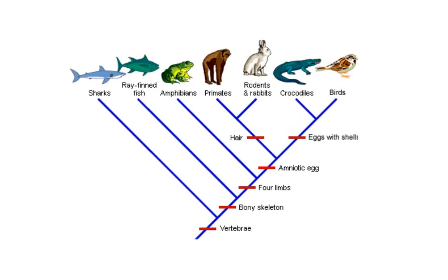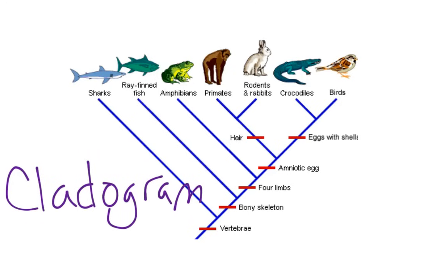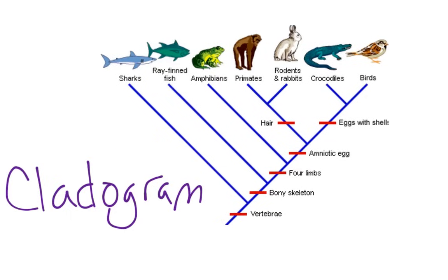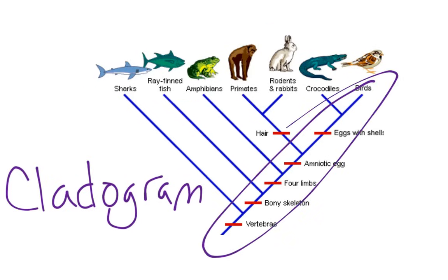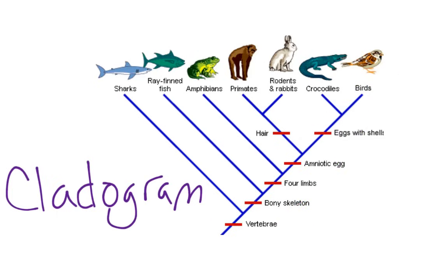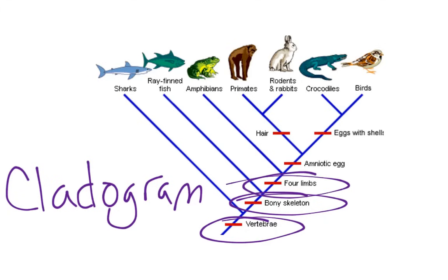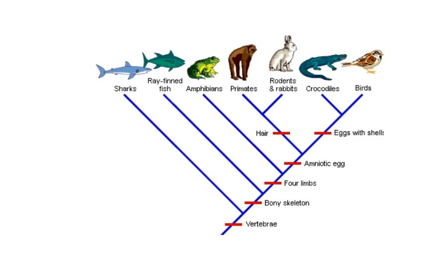In quick review: a cladogram is a diagram that shows evolutionary relationships. It arranges organisms across the top, shows you what the different groups are, and gives you an evolutionary lineage showing which organisms are most closely related. It separates organisms by various characteristics — vertebrae, bony skeleton, four limbs, amniotic egg, etc. — and those characteristics help us sort out which organisms are most closely related and which are most distantly related to one another.